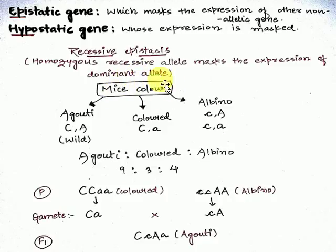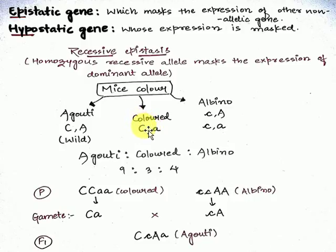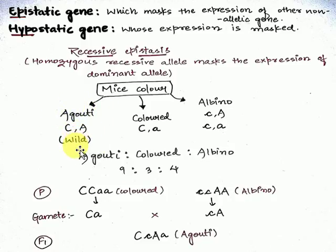Let's take the famous example of mice coat color. The coat color can be of three types: agouti, which is the wild type and the normal color of mice; colored; and albino. You have to memorize that agouti is the wild type among them.